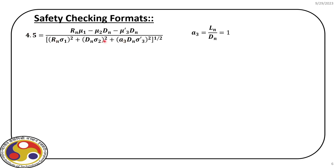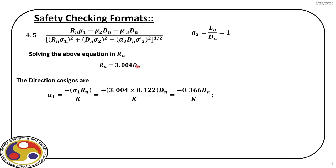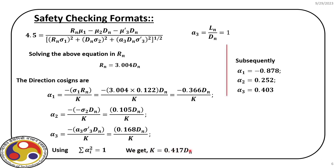Since the left hand side represents the target reliability of 4.5, we solve for the only unknown, which is Rₙ, expressed as 3.004 times Dₙ. Then we find the direction cosines, which are in terms of capital K. Using the properties of direction cosines, we find K equals 0.417 times Dₙ. Subsequently, we find α₁ = −0.878, α₂ = 0.252, and α₃ = 0.403.